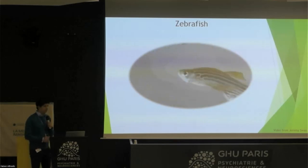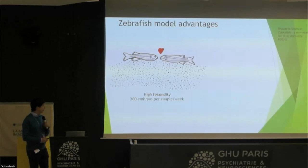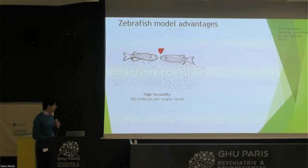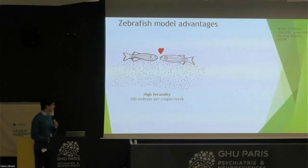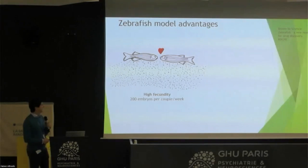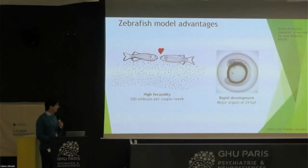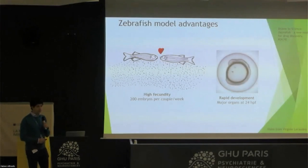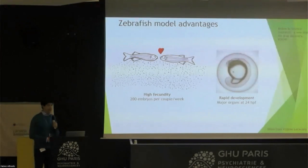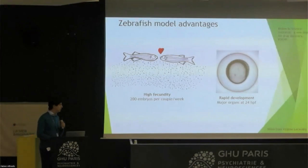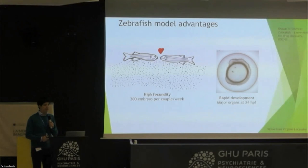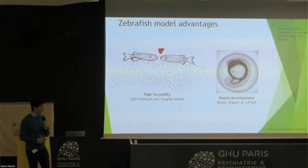Why do we use these fish? One of the main advantages is that they breed around 200 embryos per couple every week, so we have a lot of animals to test different drugs. More importantly, they develop very rapidly — in 24 to 48 hours, they have almost all their organs developed, so we can test different diseases and compounds in a very short time.